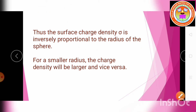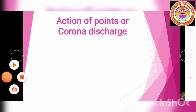For a smaller radius, more charges are distributed on the surface of the sphere. This leads us to the next concept: action at points or corona discharge.